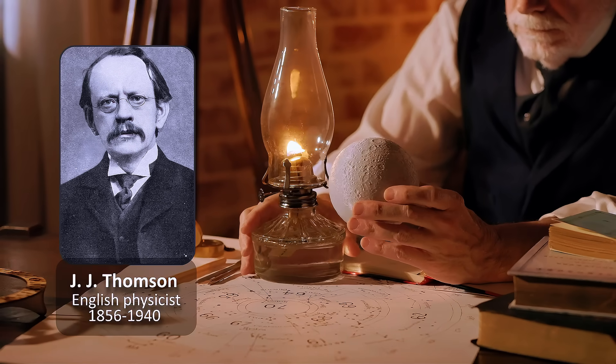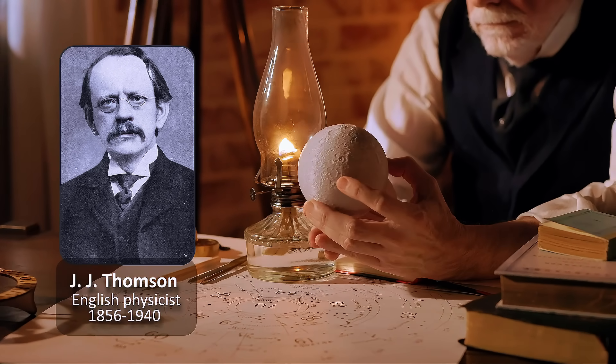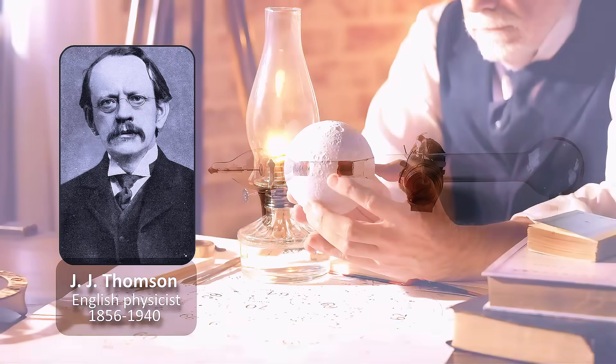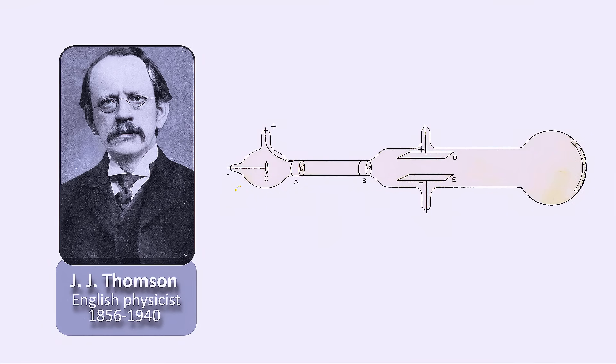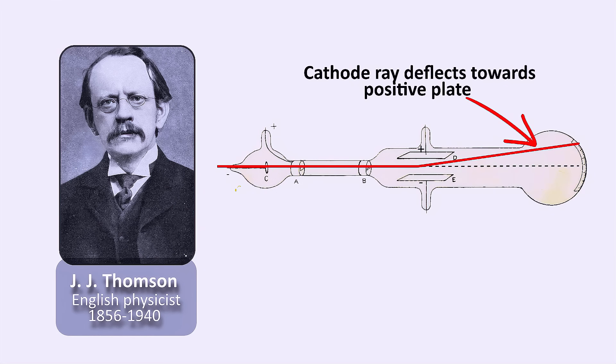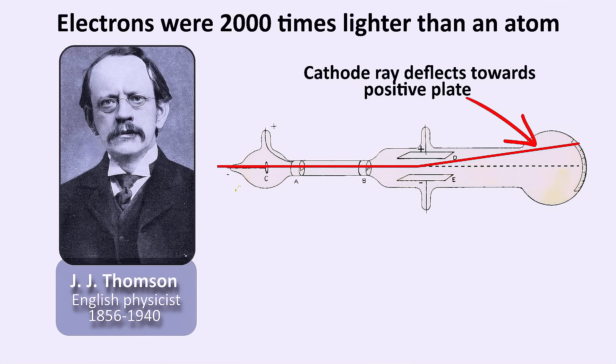In the late 1800s, JJ Thompson discovered something shocking. He found that atoms themselves were made up of even smaller particles. Passing an electric current through a vacuum tube, he observed that it was attracted by positively charged metal plates, but repelled by negatively charged ones. This proved that the current flowing through the tube was made up of negatively charged particles, which we now call electrons.